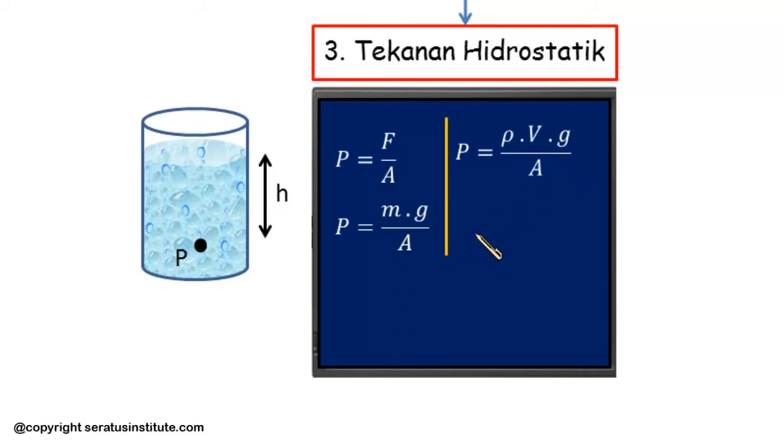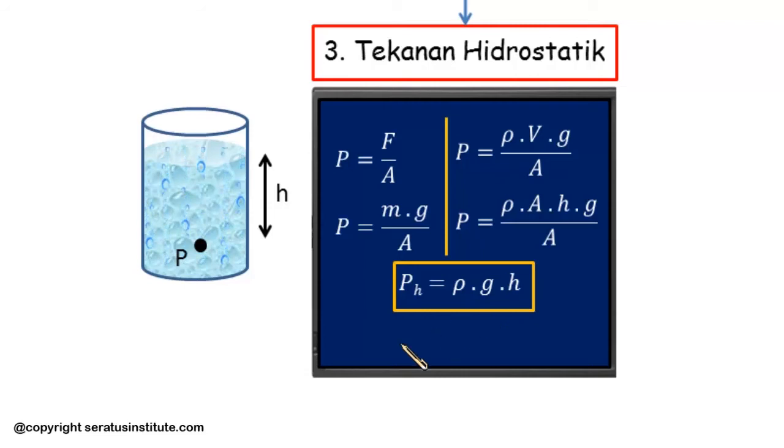Mass from the density formula is rho times V. So pressure equals rho V G per A. Where volume V here is area of the base times its depth. So this is rho times A times H times G per A. There's something identical here, we can cancel them out. So the hydrostatic pressure formula is rho G H. This is the hydrostatic pressure formula, where H is the depth with units of meters.